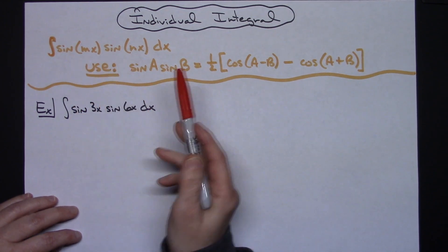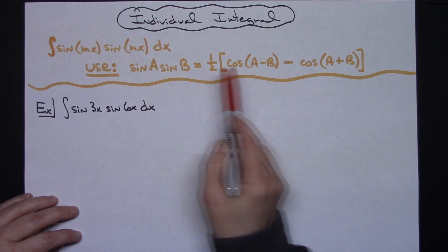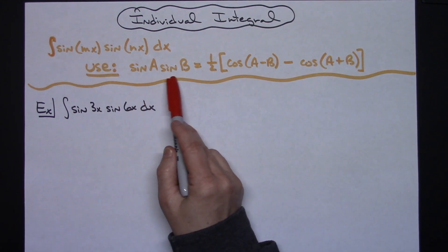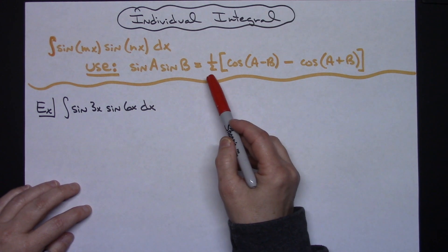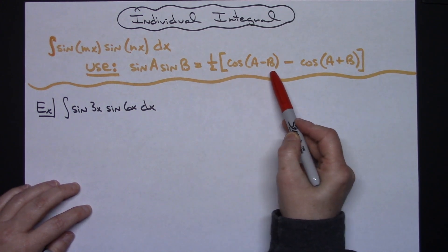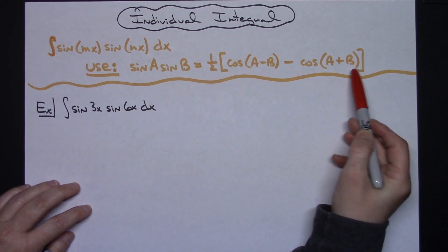Now the easiest way to go about doing this is to use a trig substitution. So when I've got the two sines being multiplied together here, I can do the one half cosine a minus b minus cosine a plus b.